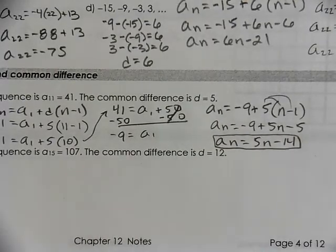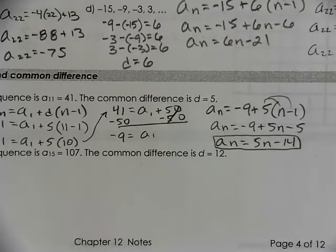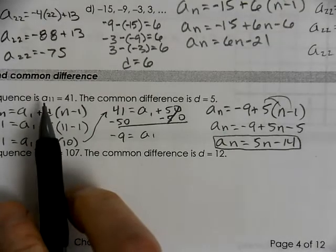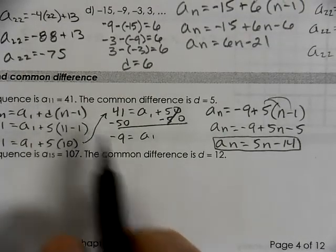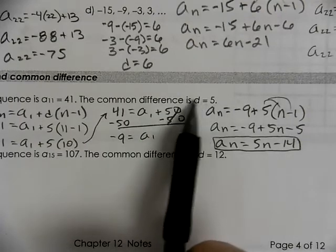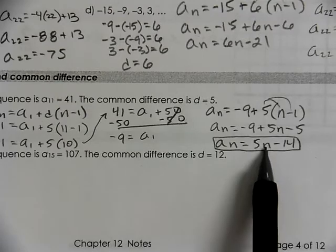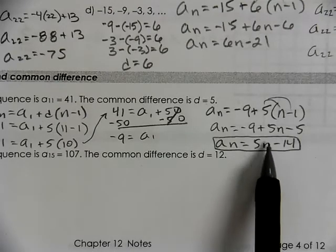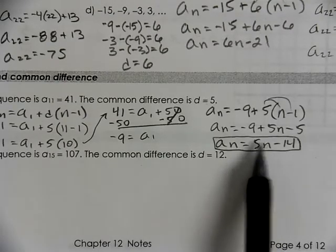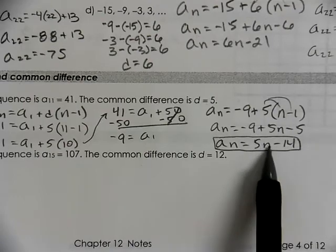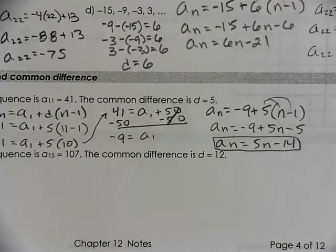There's a rule if the 11th term equals 41 and the common difference had to be 5. You could test this out by plugging in an 11. 11 times 5 is 55 minus 14 gives us the 41.